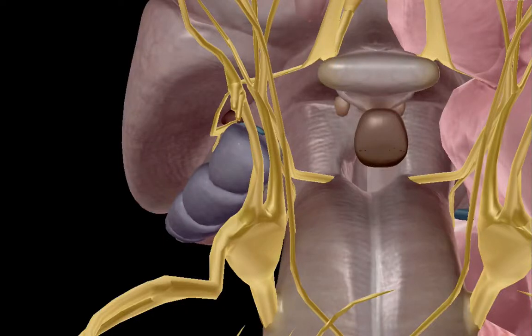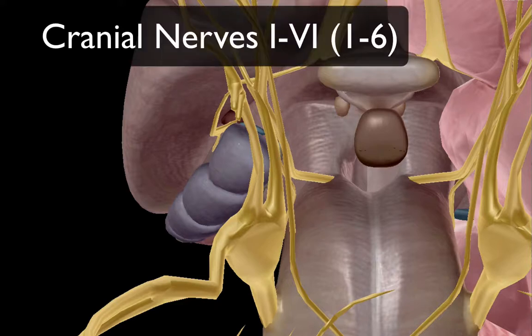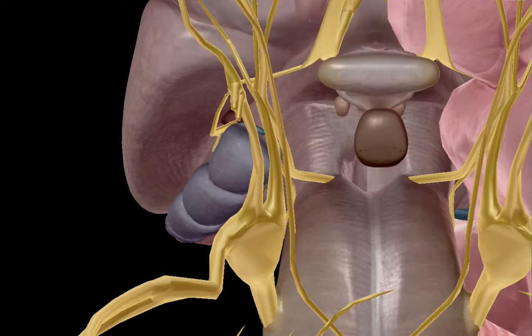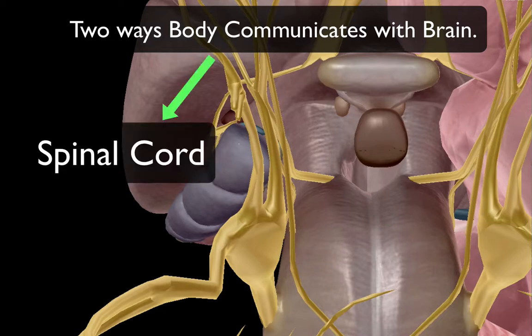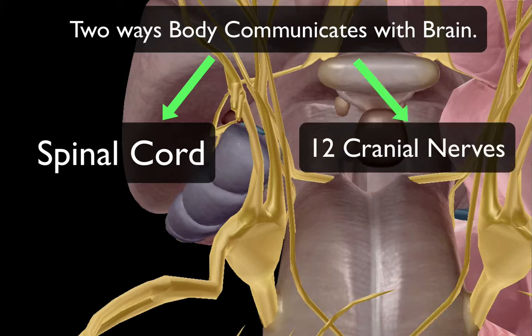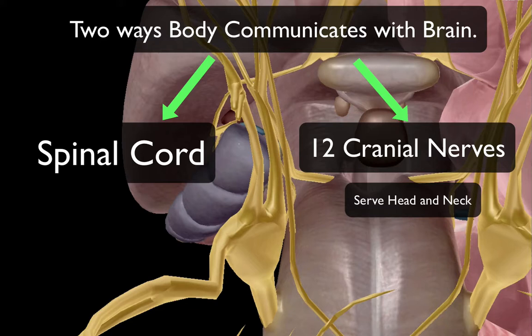In this anatomy and physiology video, we're going to be discussing the first six cranial nerves. Your body communicates with the brain via a very complicated nervous system — for most of the body, it communicates via the spinal cord. There are also 12 cranial nerves that mainly serve the head and neck, and those are the ones we're going to be highlighting in this video.